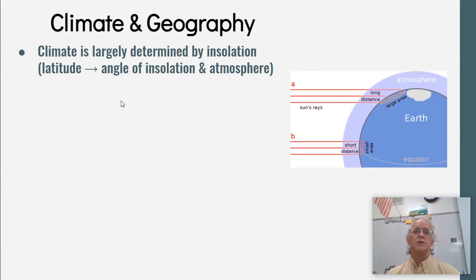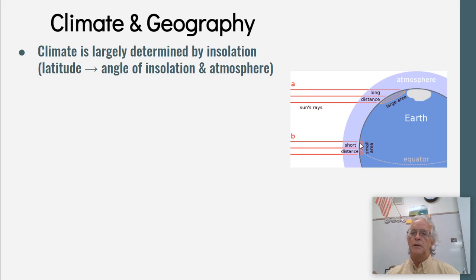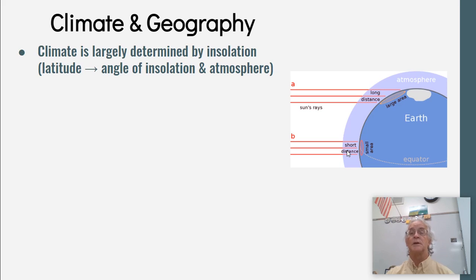The climate is largely determined by insolation, which means that latitude determines the angle and the amount of atmosphere. Here we have a certain amount of power coming in over a small area, and here it's over a large area. This beam is going through a very small portion of atmosphere, meaning less light is being scattered than what is being scattered at higher latitudes.